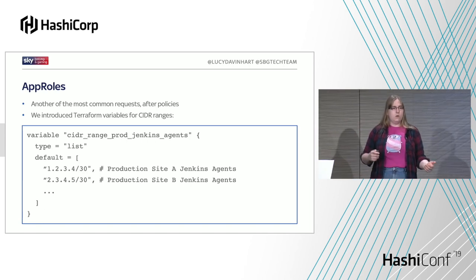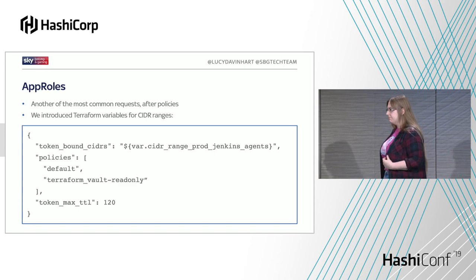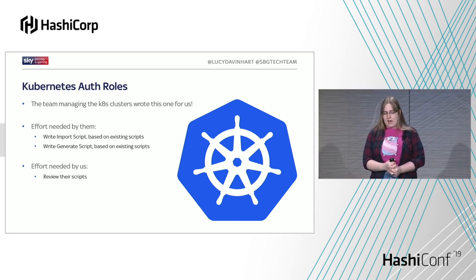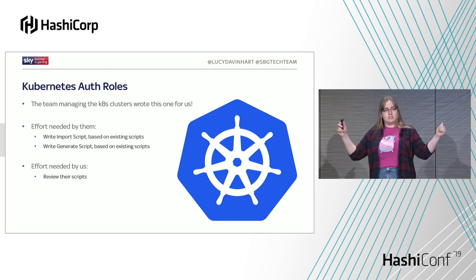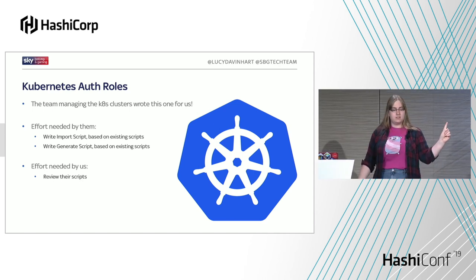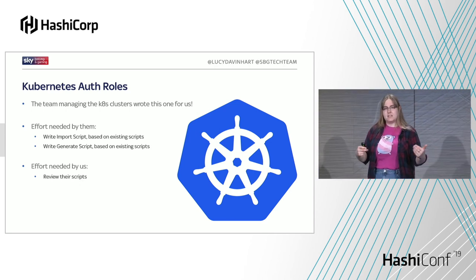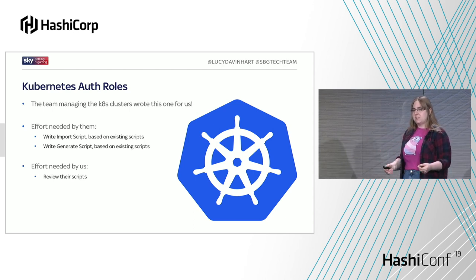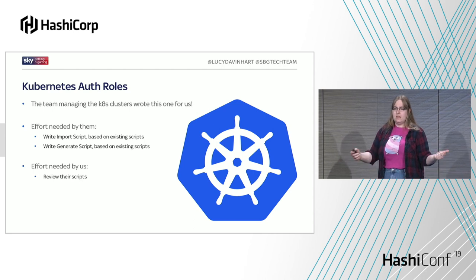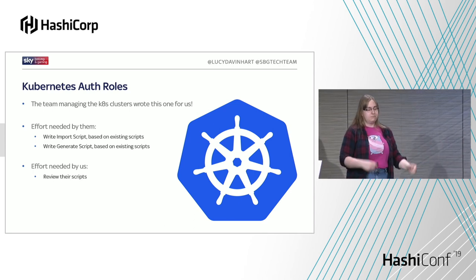It also means that when looking in this repository, we don't have a list of IP addresses we need to figure out — we have a human-readable variable name. Next, we added Kubernetes auth, which is a pretty cool authentication mechanism for Vault. The team that manages our Kubernetes clusters came to us and said they wanted to use Kubernetes as an auth mechanism. We said fine, with two problems: we don't know how Kubernetes works and we don't manage it. So we told them they were free to add it to this pipeline, and because of the way we'd designed it, they didn't have to do much work — just add an import script and a generate script. I love it when our users go away and add features like this for us.